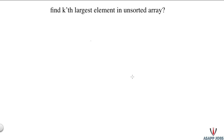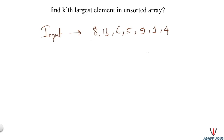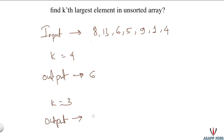Today we look into the interview question: an unsorted array is given and we need to find the kth largest element. For example, if the input sequence is given and k equals 4, the output would be 6. Similarly, in the same input sequence if k equals 3, then the output would be 8.